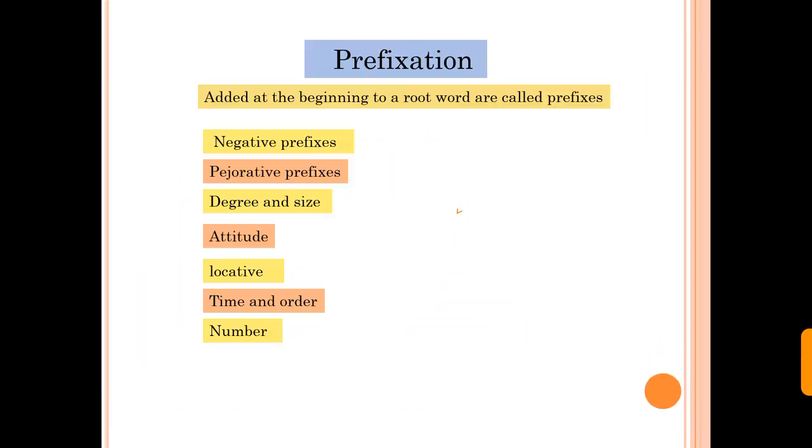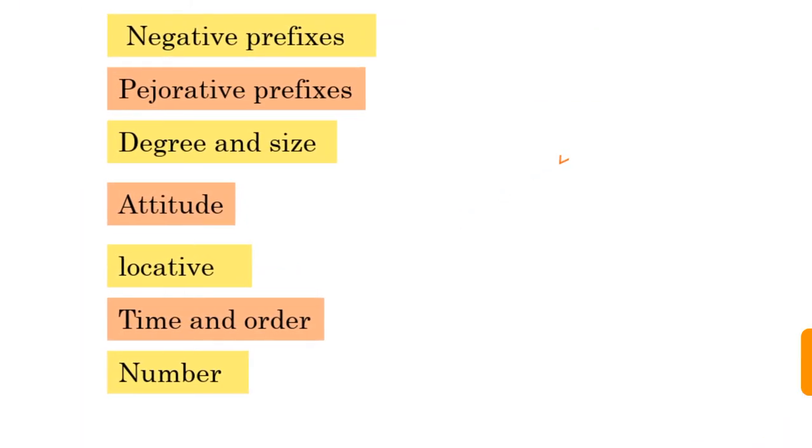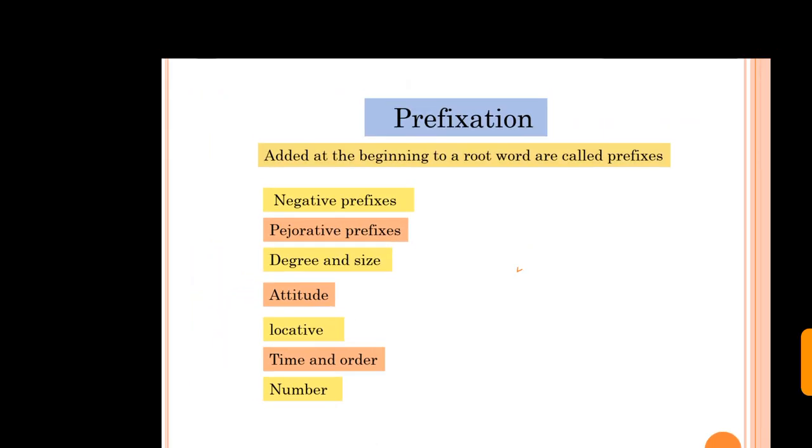Now there are different kinds of prefixation. These kinds are negative prefixes, pejorative prefixes, reservative prefixes, some prefixes show the degree and size, prefixes of attitude, locative prefixes, time and order prefixes, and number prefixes.